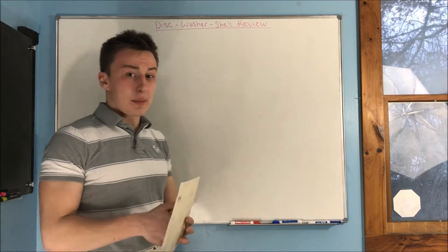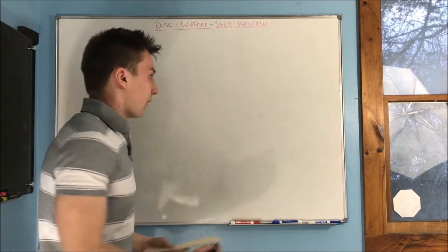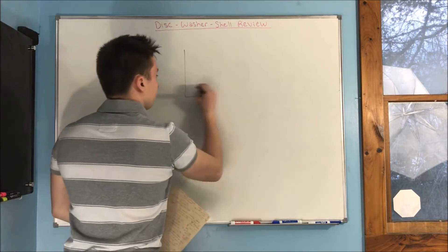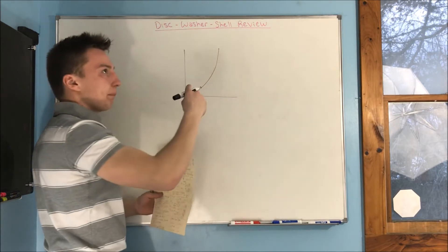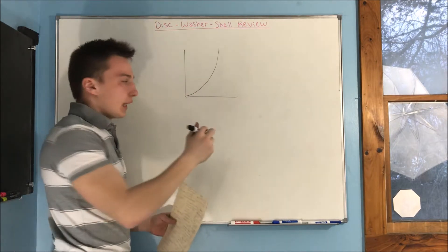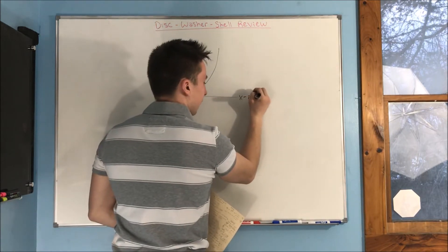So, first off, we're going to talk about disk method. When do we use disk method? Well, if we have a graph, let's say that we're rotating a region about the x-axis.